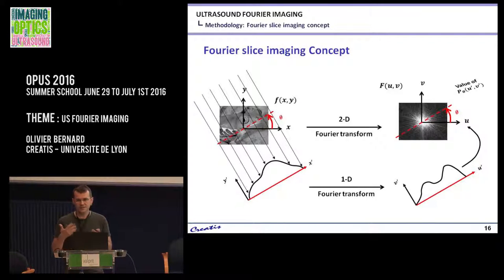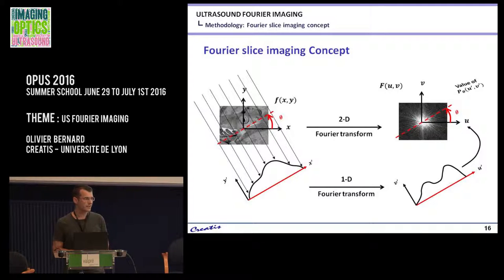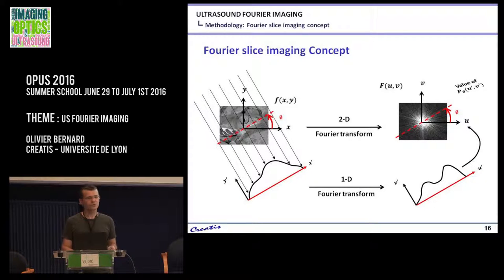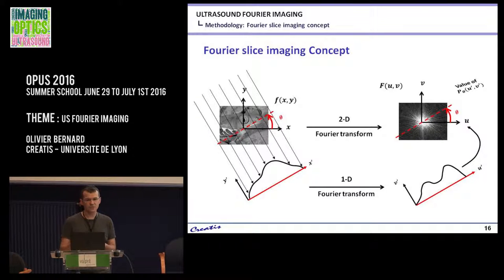So the idea is: if you get back this information for all different angles, you are able to reconstruct the full Fourier transform of the object, and then go back to the object itself. This technique is well known and has been used quite a lot for different imaging modalities.